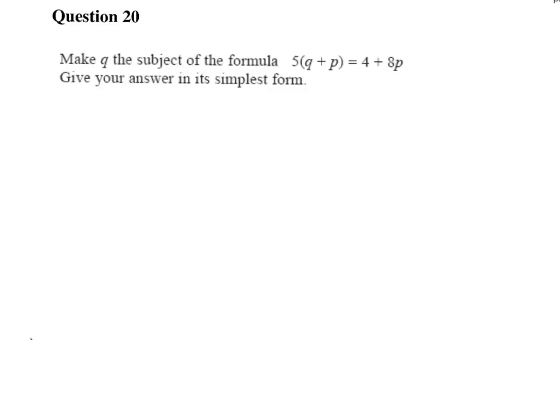So we'll start off by expanding our brackets. So we've got 5Q plus 5P equals 4 plus 8P.